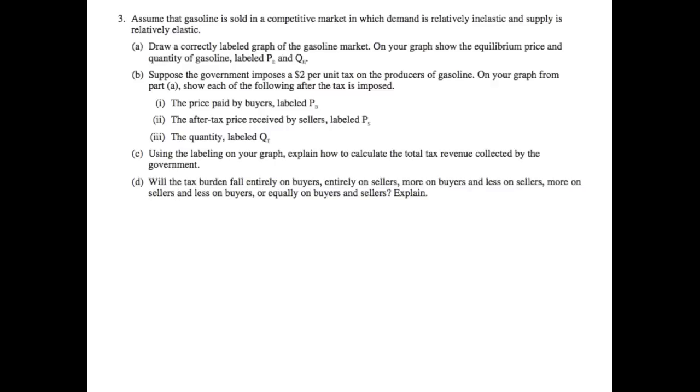In this question we're asked, assume that gasoline is sold in a competitive market in which demand is relatively inelastic and supply is relatively elastic. Draw a correctly labeled graph of the gasoline market, and on your graph show equilibrium price and quantity of gasoline, labeled PE and QE. So the first thing to note is that we are in a competitive market, and therefore price equals marginal cost, and you have a standard supply and demand curve. And the second thing to note is the elasticity of the demand and the supply.